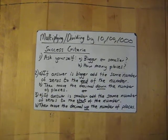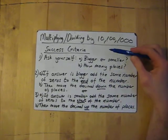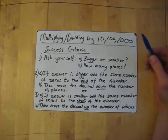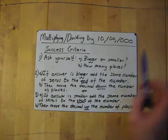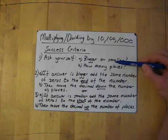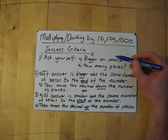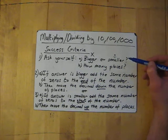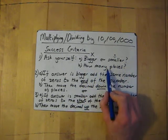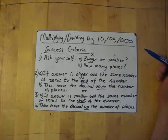We're going to have a look at multiplying and dividing by 10, 100, and 1,000. The success criteria looks like a lot but it's very straightforward. Ask yourself two questions: bigger or smaller, and how many places? If you're multiplying, then it's bigger. If you're dividing, then it's smaller. And by how many places is determined by how many zeros there are in the number you're multiplying or dividing by.